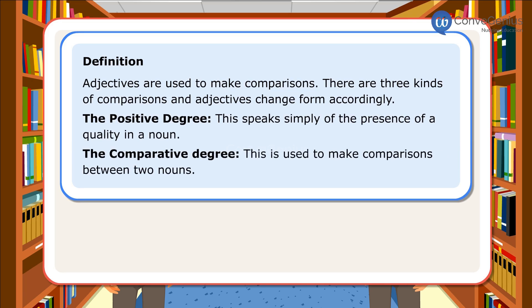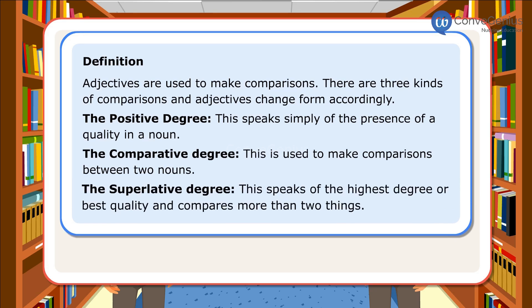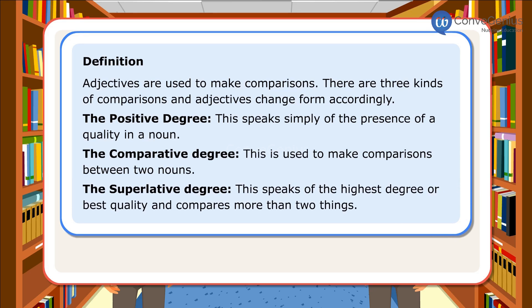The Comparative Degree is used to make comparisons between two nouns. The Superlative Degree speaks of the highest degree or best quality and compares more than two things. Let us look at a few sentences.